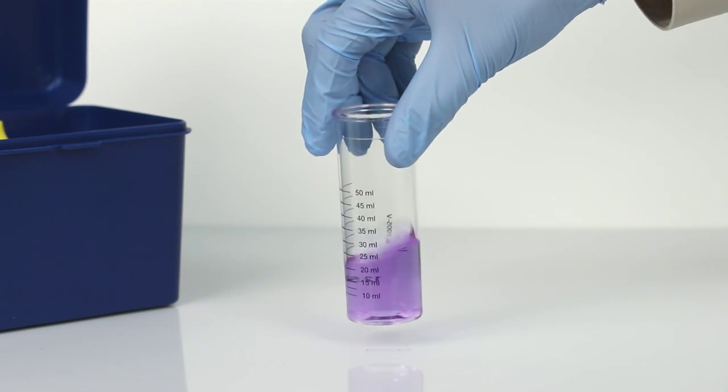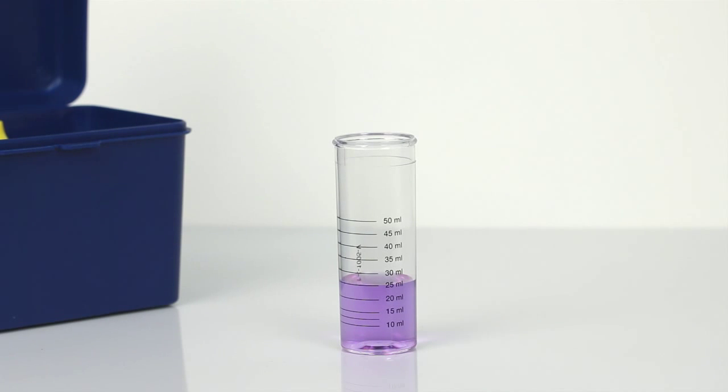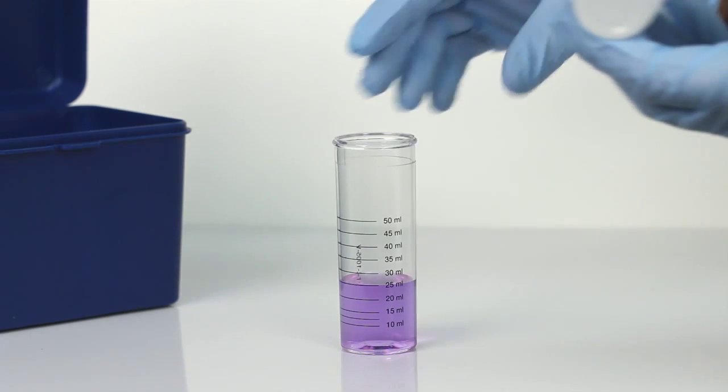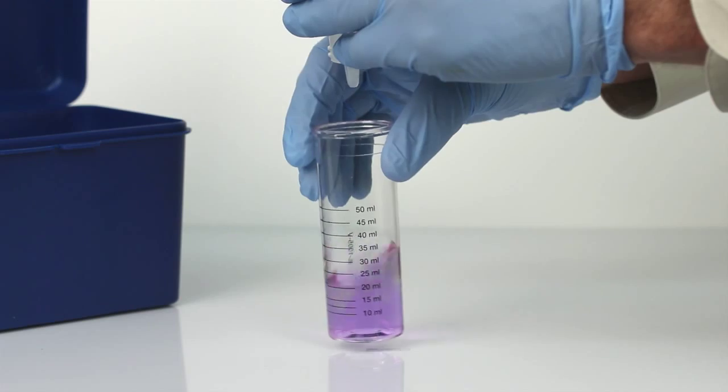If the sample turns yellow, continue to the next step of adding mercuric chloride titrant. If the sample turns blue-purple, add chloride adjuster one drop at a time, swirling after each drop until the sample color turns yellow.